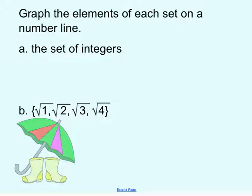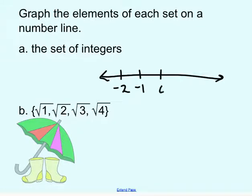We can also graph these on a number line. If we wanted to graph the set of integers, we would do a number line for maybe negative 2, negative 1, 0, 1, 2, and put a dot on each of these. Would we connect them? No, because we can't have those decimals or fractions in between — we just want those whole number values.